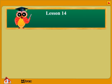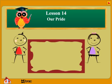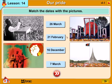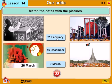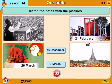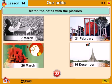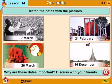Lesson 14: Our Pride. Match the dates with the pictures. 26th March, 21st February, 16th December, 7th March. Why are these dates important? Discuss with your friends.